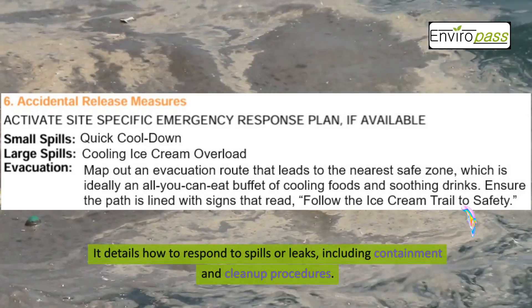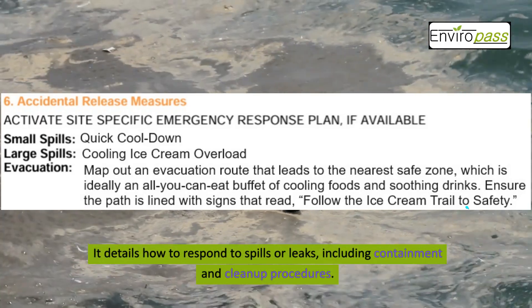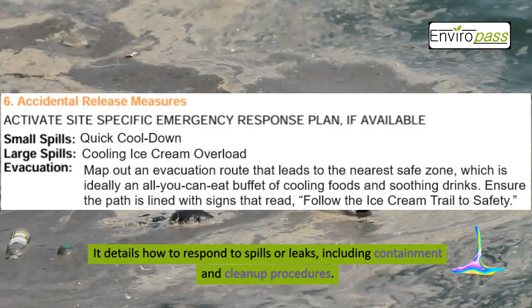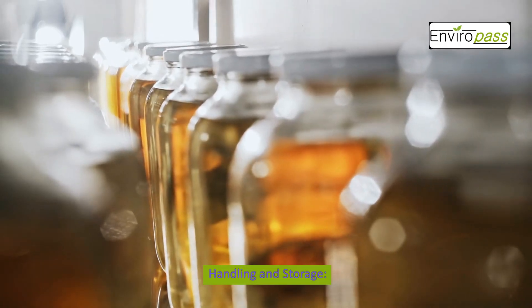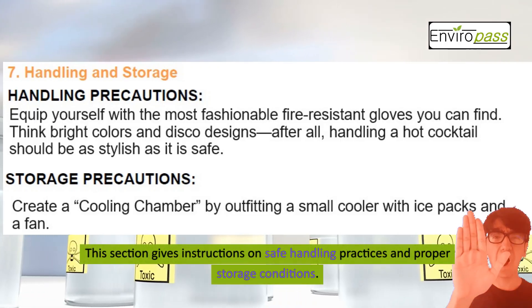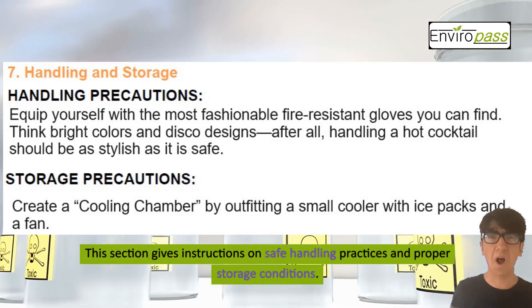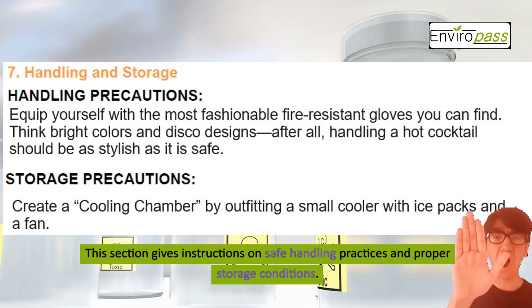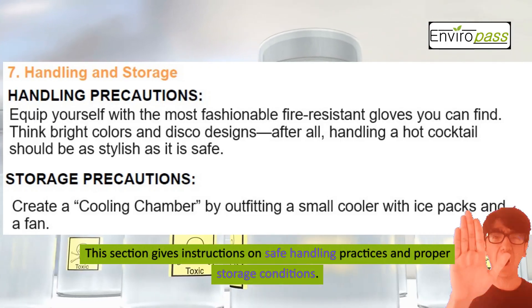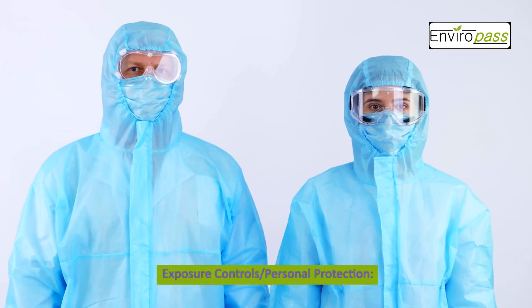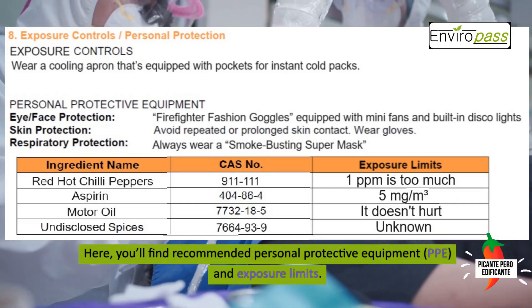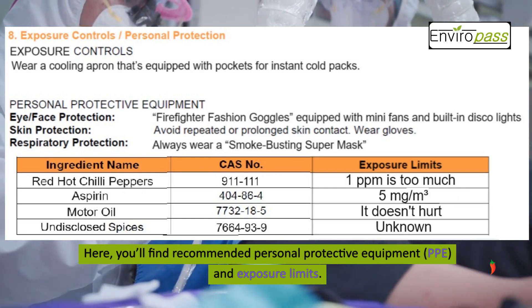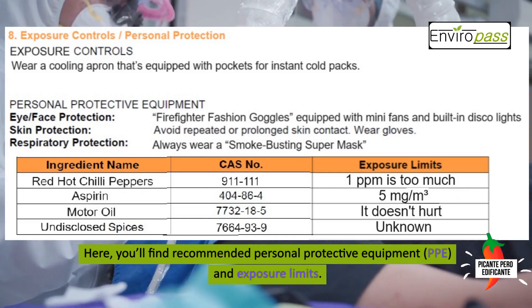Section 6, Accidental Release Measures, details how to respond to spills or leaks, including containment and cleanup procedures. Section 7, Handling and Storage, gives instructions on safe handling practices and proper storage conditions. Section 8, Exposure Controls and Personal Protection, provides recommended personal protective equipment, PPE, and exposure limits.